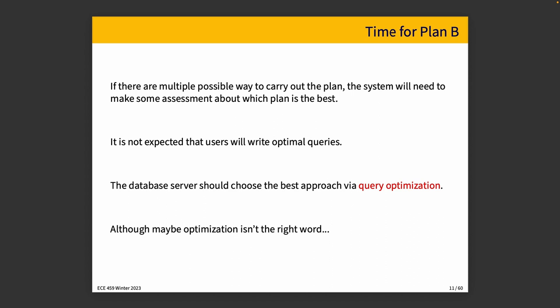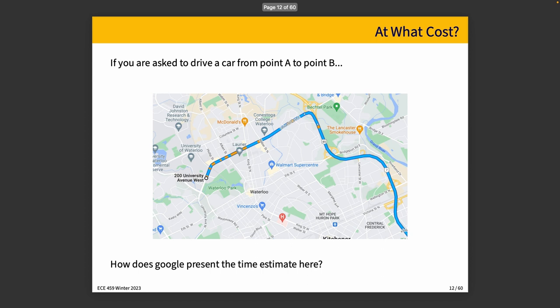The database server should choose the best approach via query optimization — though 'optimization' may not be the correct word, because we're not necessarily choosing the optimal approach. Instead, we're going to make some estimates about the query plans and try our best to estimate what we think the cost of doing this is, and make a decision based on those estimates. This suggests we're going to use some heuristics and trade some accuracy for time, because it may not be possible to know absolutely everything. Absent that, we make our decision based on partial information, which may be less accurate, but we'll have an answer sooner.